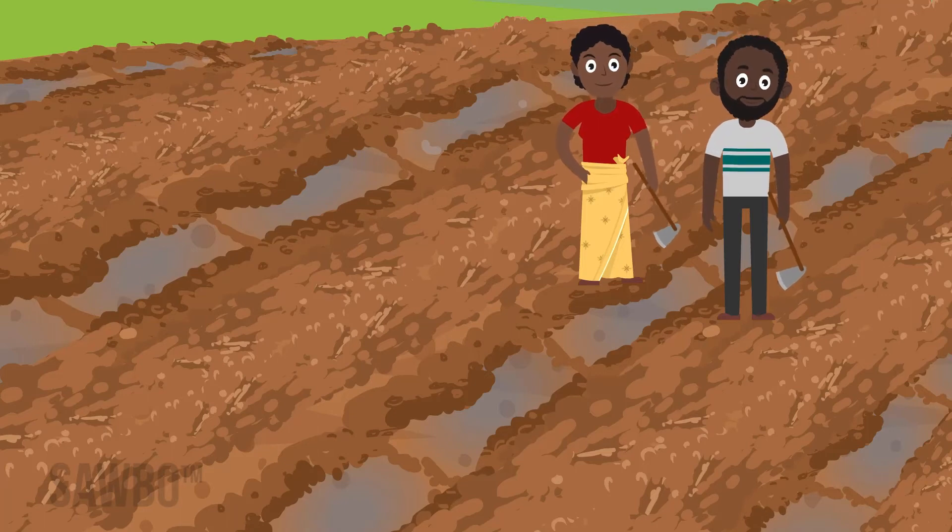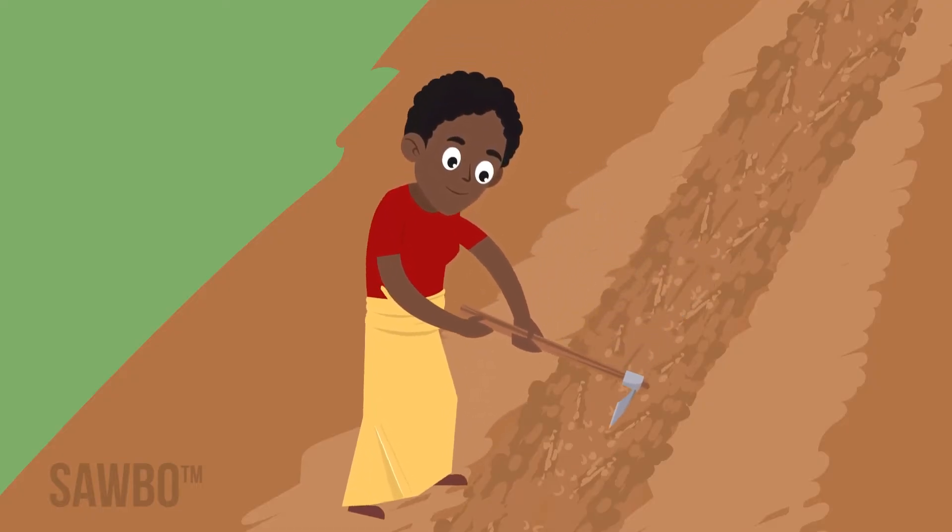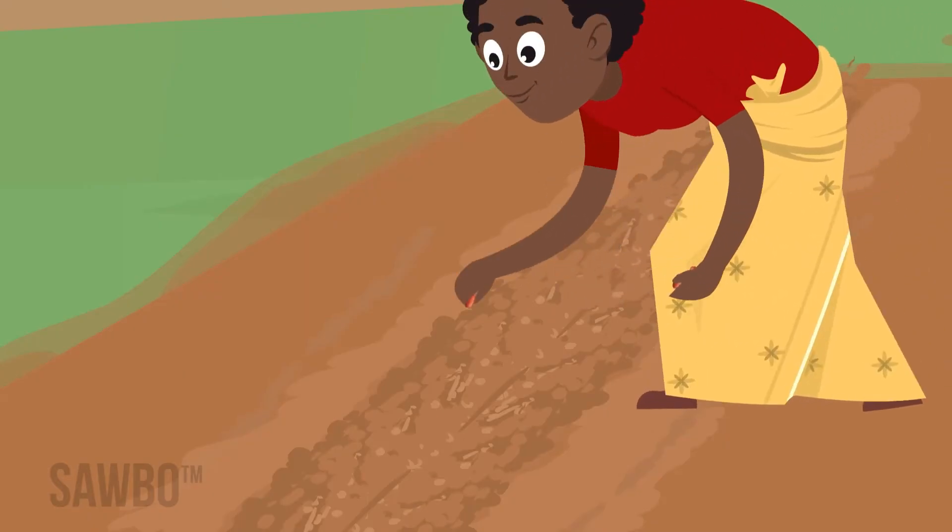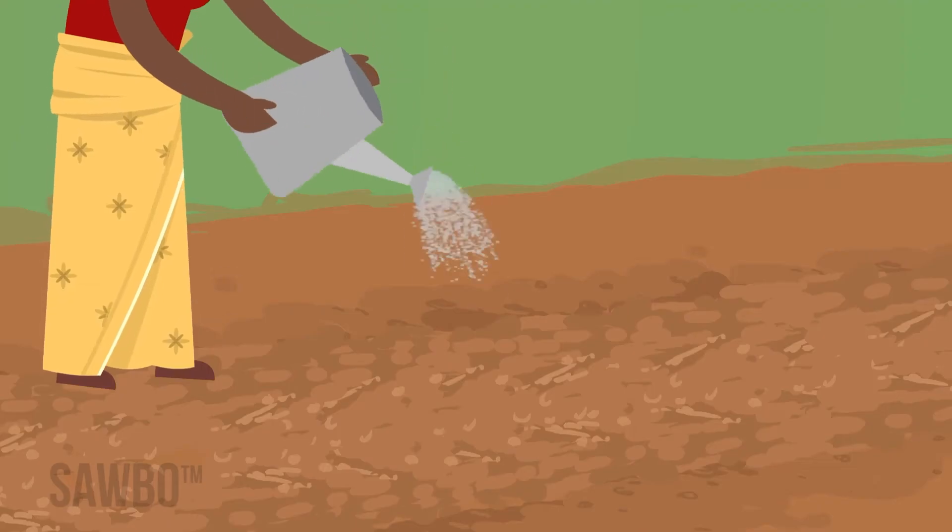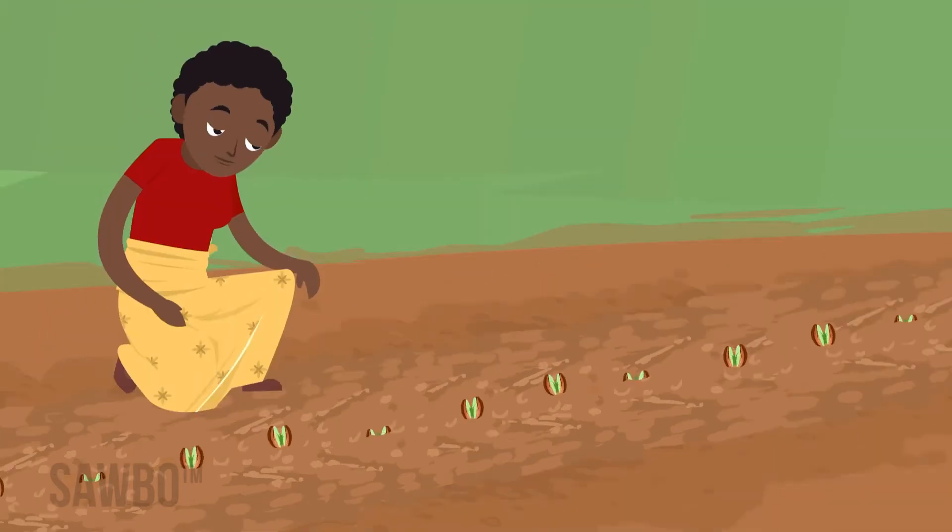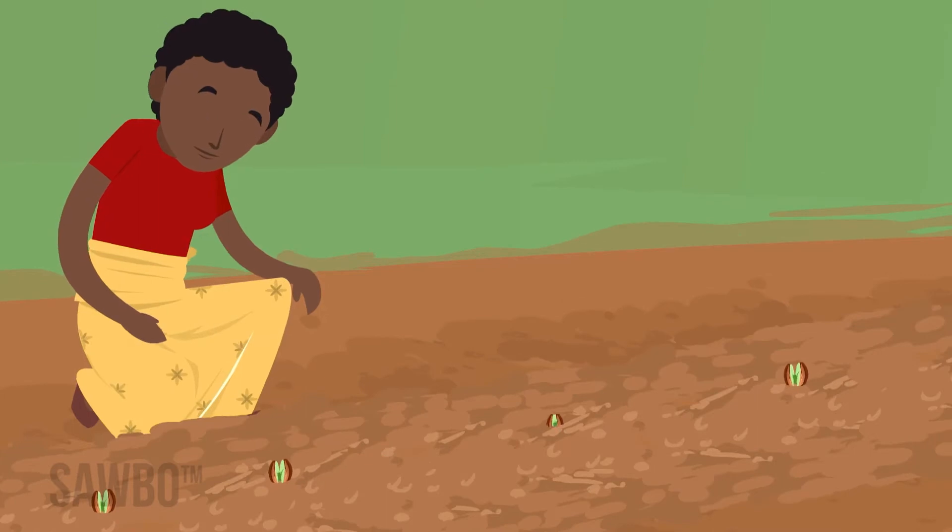While you're preparing the land, you should test the seed to see how well it germinates. Plant 40 seeds in a row near your house, water them, and count how many have sprouted within two weeks. If you see less than 30 sprouts, plant the seed closer together in the field. If you see less than 20 sprouts, consider buying new seed.